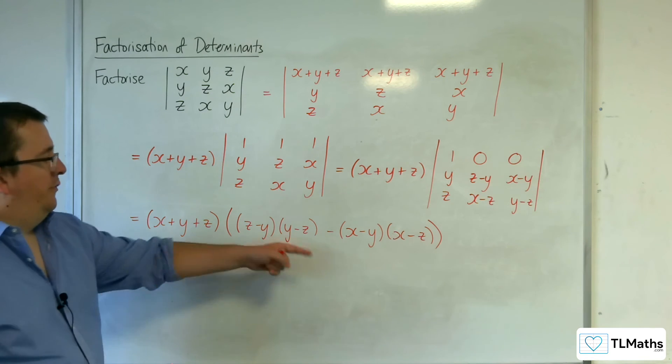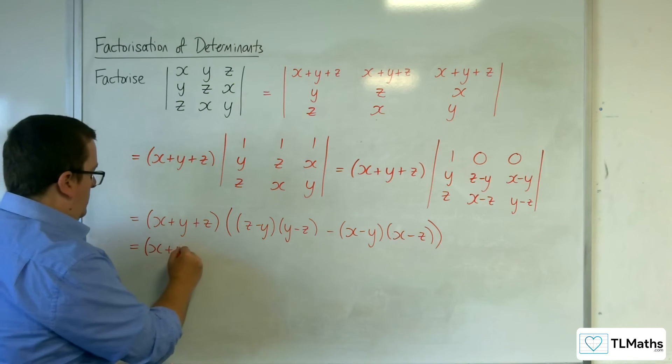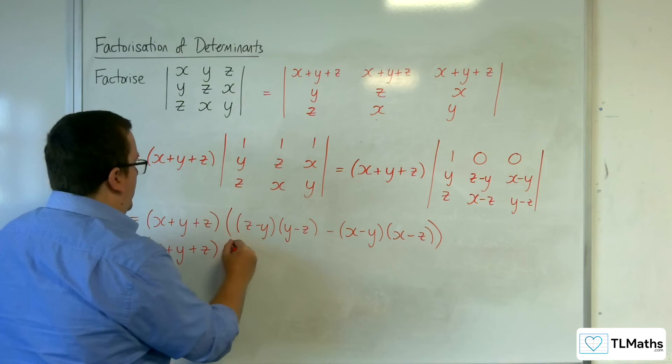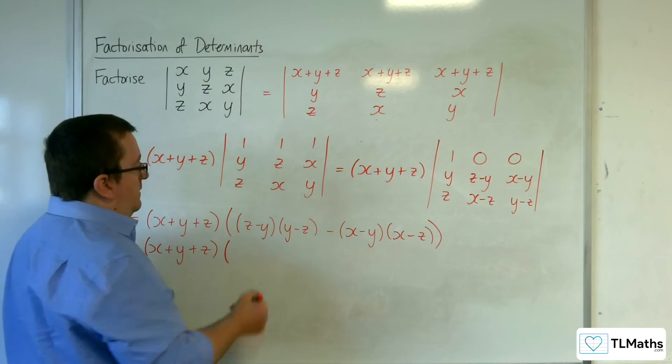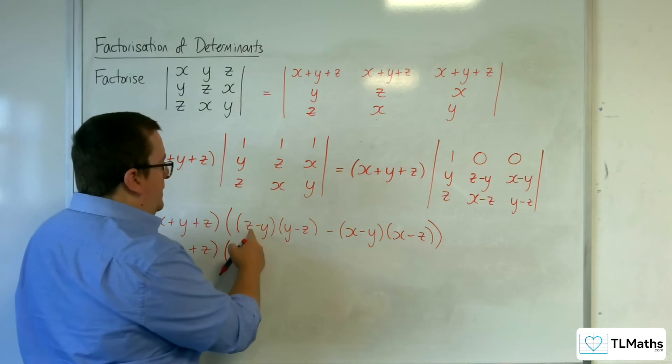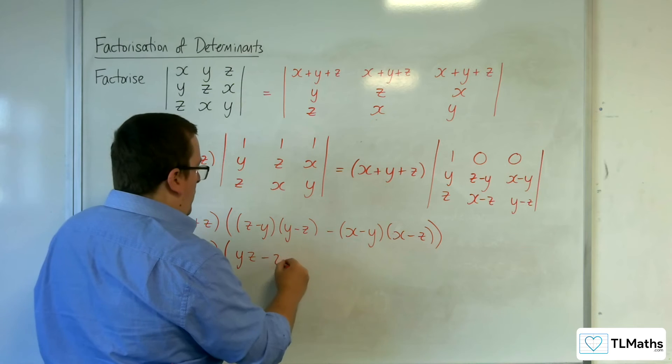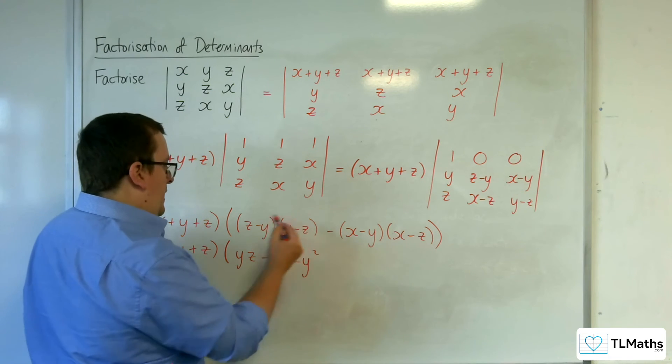So I'd probably want to expand that out. If I can spot any extra factorisations then I will, but this may be as far as I can get. So z times y, I'll write it as yz, then take away z squared, then take away y squared, and then plus yz.